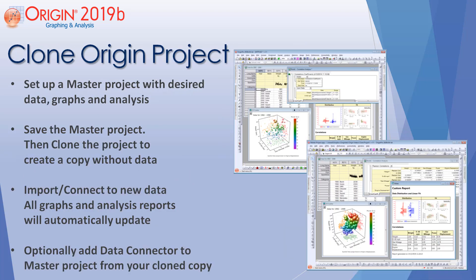You can then use the Origin connector to import data from multiple data projects, select specific worksheets or matrix sheets for import, and share data projects with colleagues. Cloning an Origin project is another new feature in this version. Set up a master project with desired data, graphs, and analysis, then save the master project and clone it to create a copy without data. Import and connect to new data, and all graphs and analysis reports will automatically update.